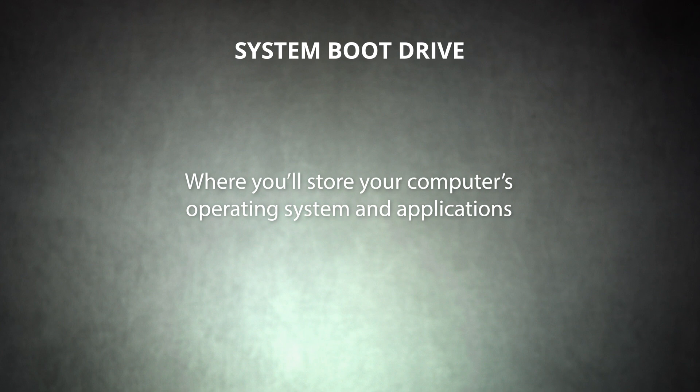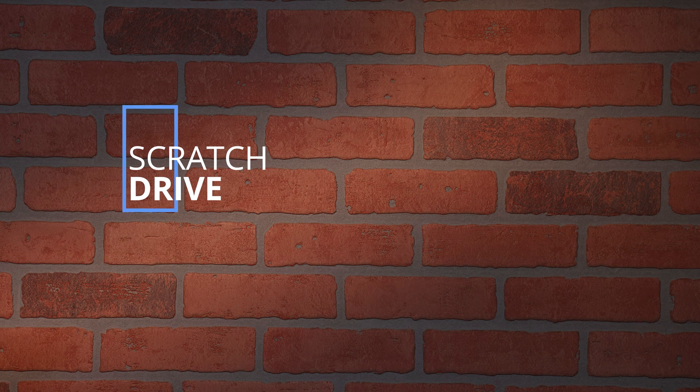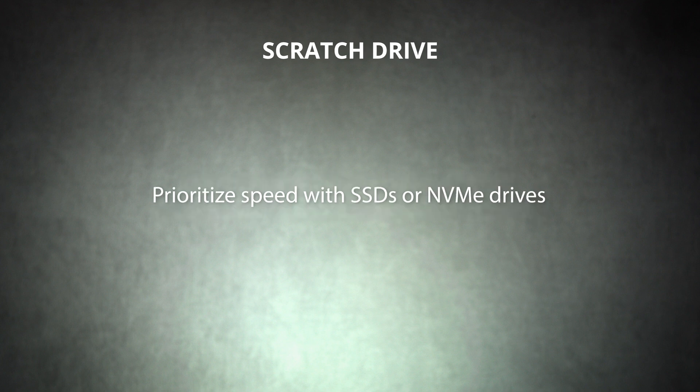Now, let's talk about the system boot drive. This is where you'll store your computer's operating system and applications. This should be a fast internal drive, but it doesn't have to be large capacity — it doesn't need space for storing large video files. The goal is to allow your system and programs to boot up more quickly. Usually, we assign an SSD or NVMe drive to this role. Next up is the scratch drive, where your editing application will temporarily store data as needed while you are working. Again, the goal is quick access, so the drive needs to be fast, but it doesn't need to be big. An SSD or NVMe will work well here too.